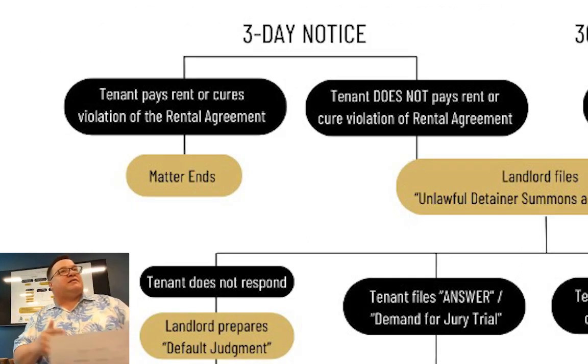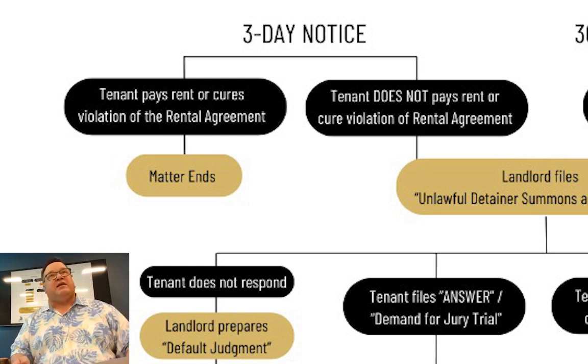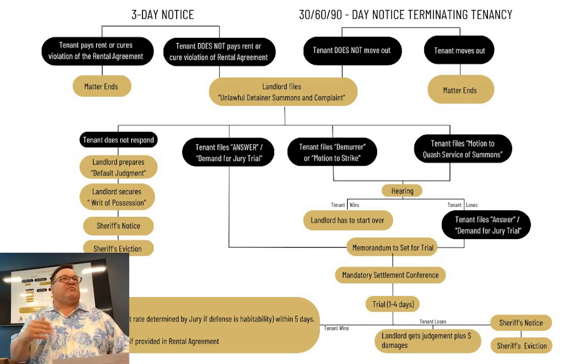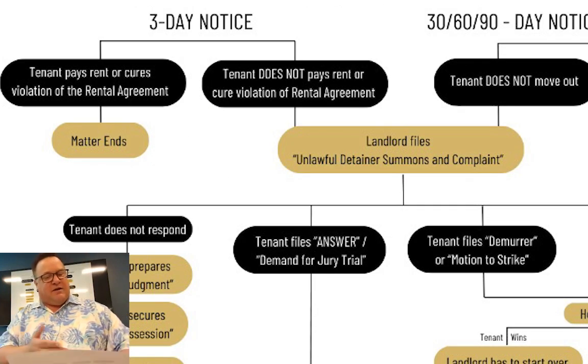The other branch is the three-day notice — that's the one you're most familiar with, also referred to as pay or quit. We run our rents and give a grace period up until the 5th. Everybody thinks that's when the rent's due, but it's not. It's due on the 1st, grace period until the 5th. On the 5th we charge a late fee. After the fee is charged, probably by the 7th, we're hitting this three-day notice. And amazingly, a lot of people pay after they get that notice. If they pay, the matter ends.